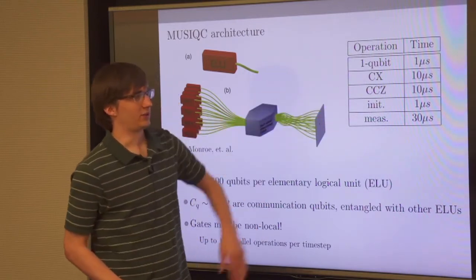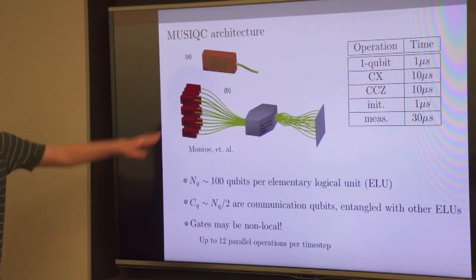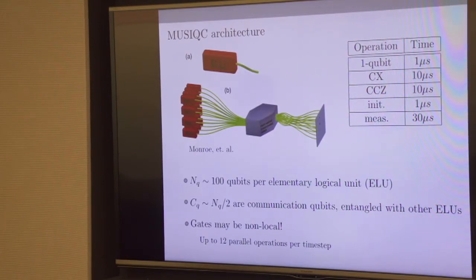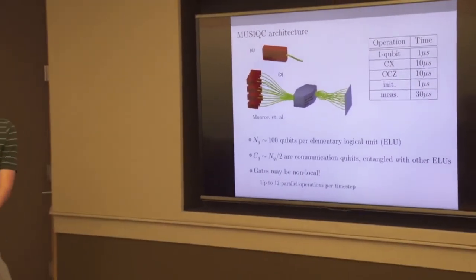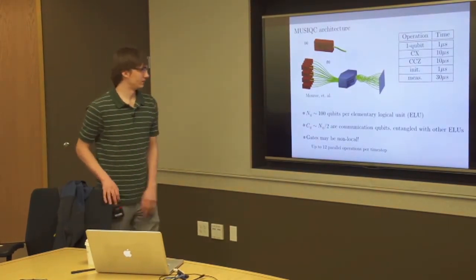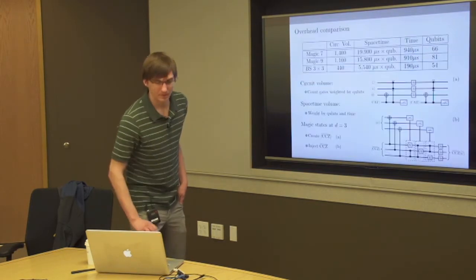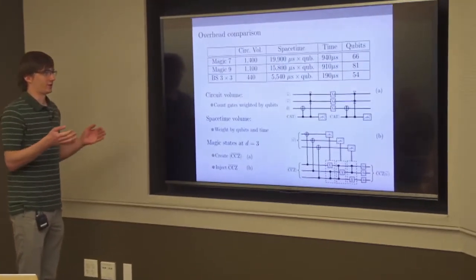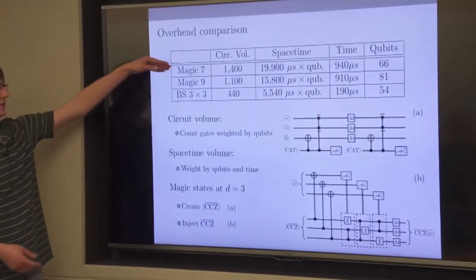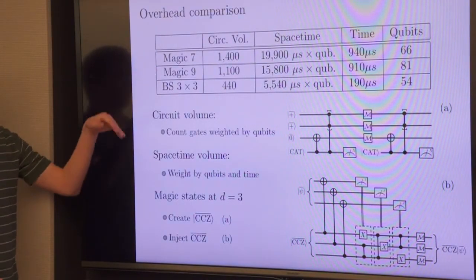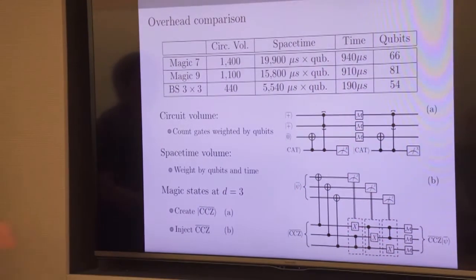They give estimates for the gate times, though these are highly idealized. I'm assuming that the entanglement was prepared beforehand and not factoring that into the time of running an algorithm. Then we compare the overhead of our circuits with magic state distillation on the seven-qubit code and on the nine-qubit code — the same Shor code, the Bacon-Shor three-by-three. Our construction is shown alongside these magic state distillation circuits.